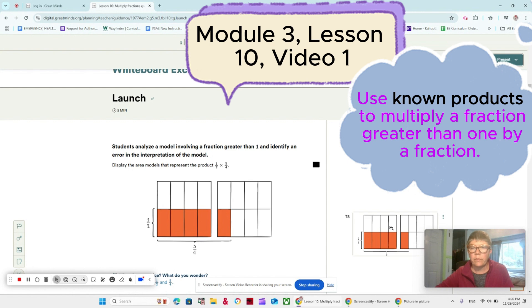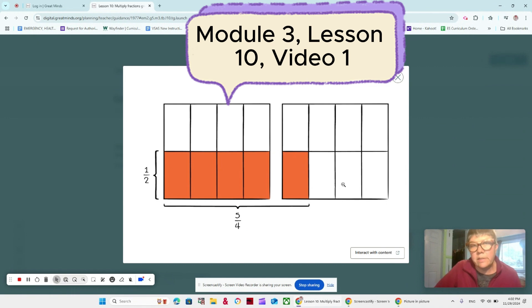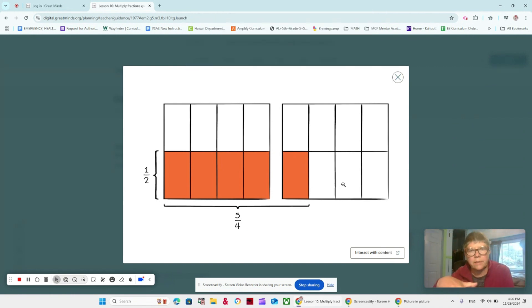Right here you can see we have a problem in front of us. What do you notice about this problem? Let's take a second to analyze it. Do you see 1 half times 5 fourths? And we're looking at the overlap there, because this would be a fourth, but we have the overlap of 1 half and 5 fourths. Notice that we have 2 pizzas, 2 pans of brownies, and there's 5 fourths. That's why we have 2 pans because it's more than 1 fourth.